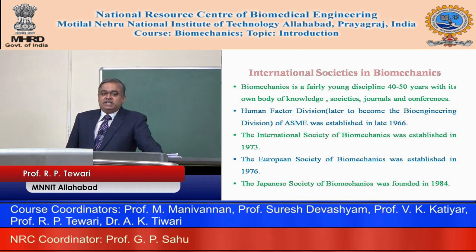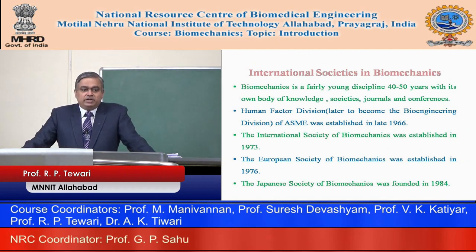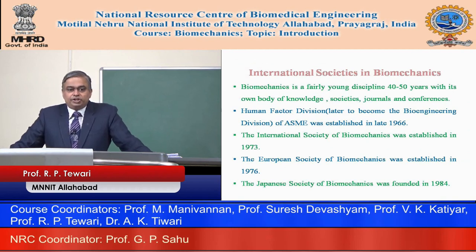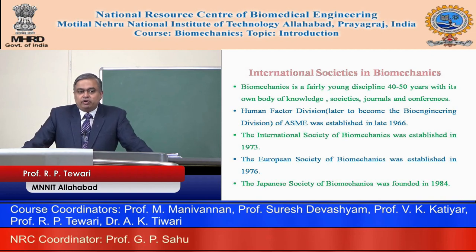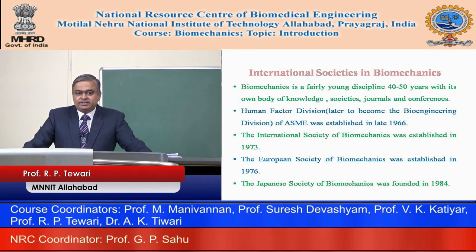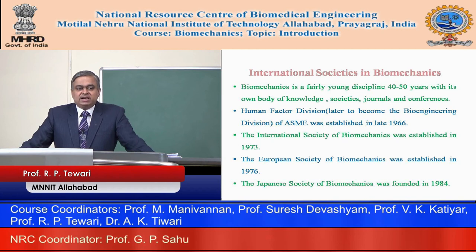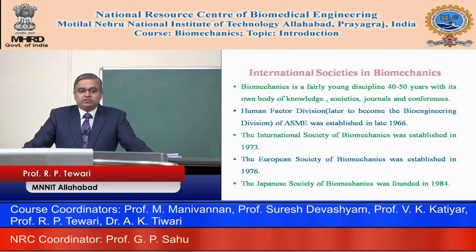Some of the international societies established worldwide: Biomechanics is a fairly young discipline, 40 to 50 years old, with its own body of knowledge, societies, journals, and conferences. The Human Factor Division — later to become the Bioengineering Division of ASME — was established in late 1966. The International Society of Biomechanics was established in 1973. The European Society of Biomechanics was established in 1976, and the Japanese Society of Biomechanics was founded in 1984.